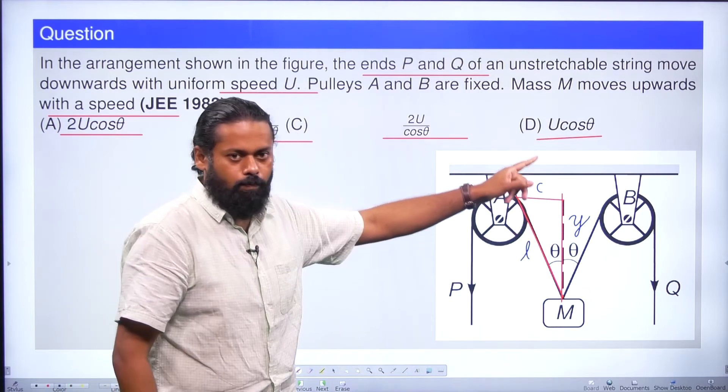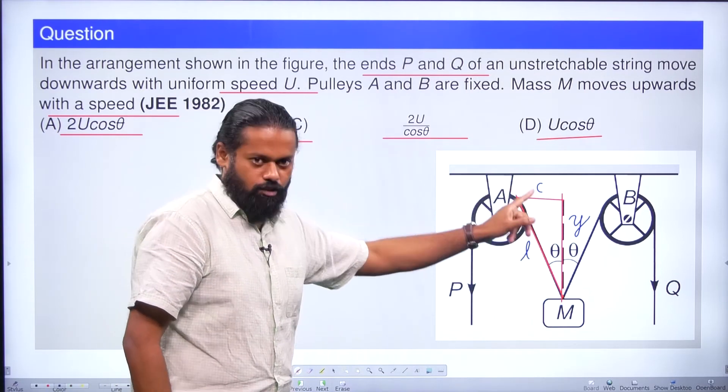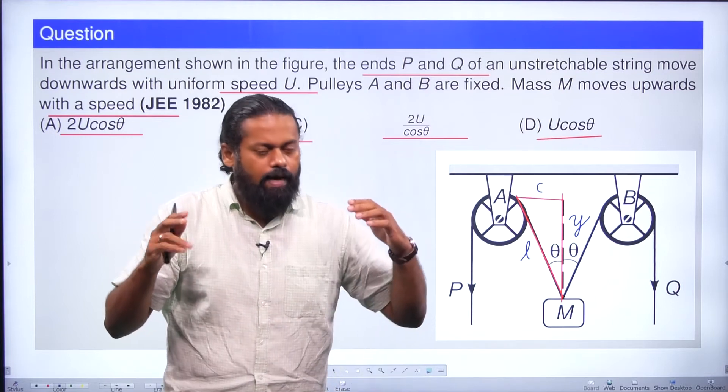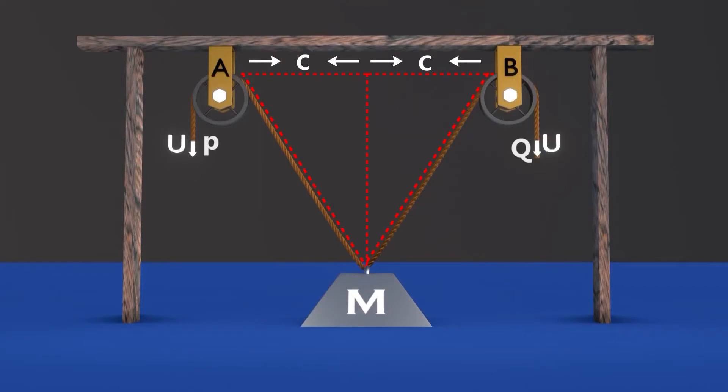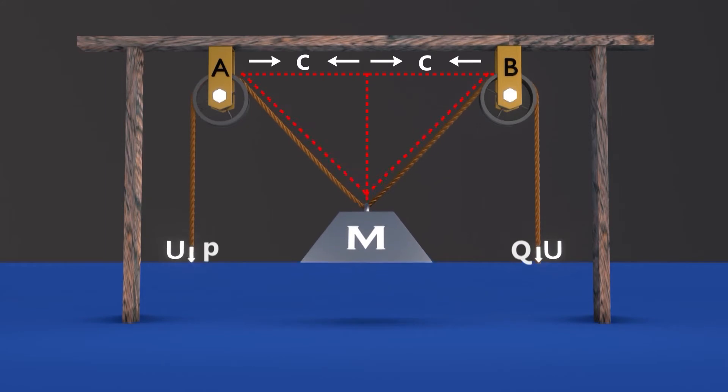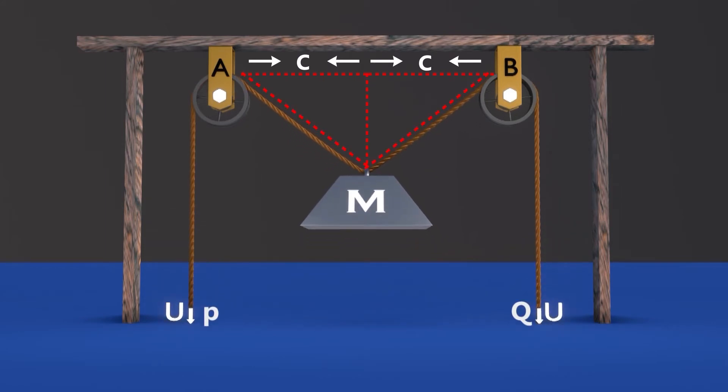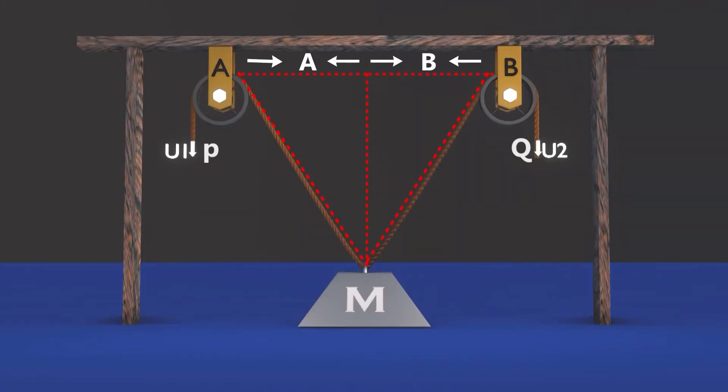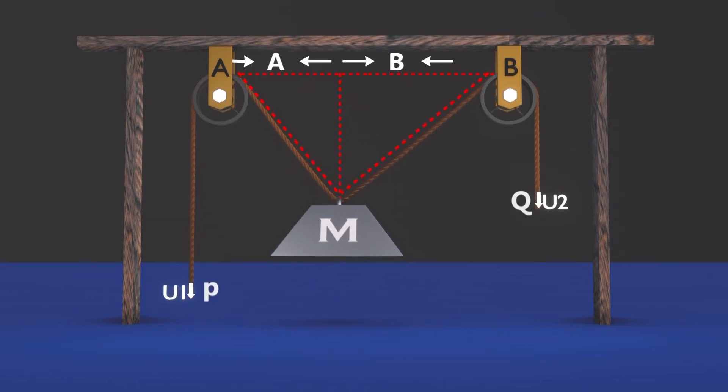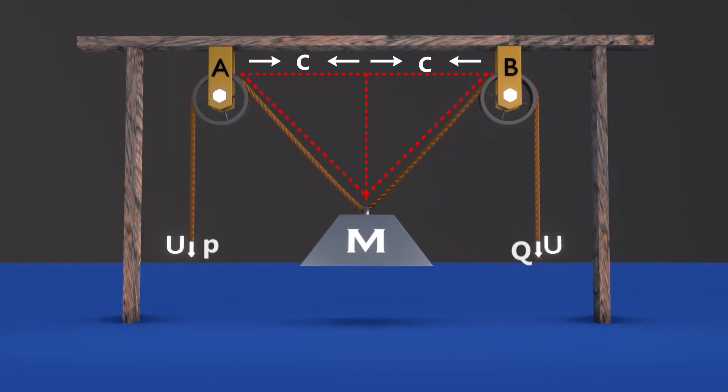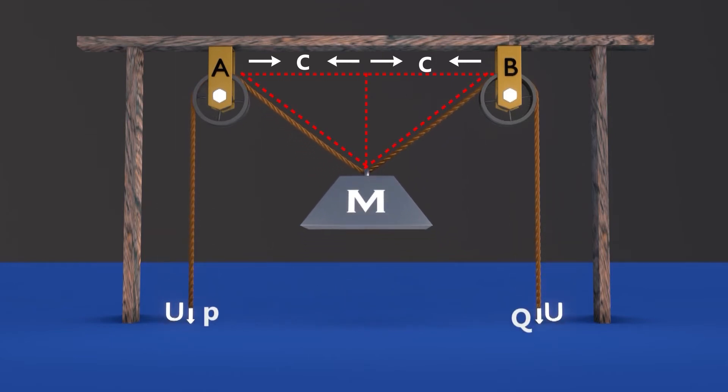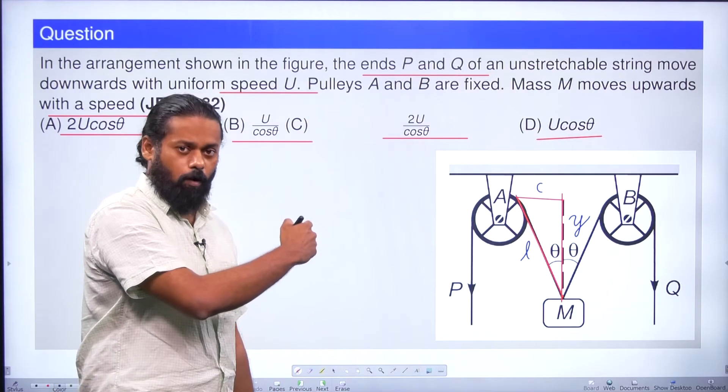Now let us see an animated illustration of the situation. Here you can see that P and Q we are pulling with the same velocity in the downward direction. As a result, the mass is going in the upward direction. If you are pulling at different velocity, this distance c is going to vary. Since we are pulling at same velocity, the distance c from the pulley to the center line is going to be constant always.